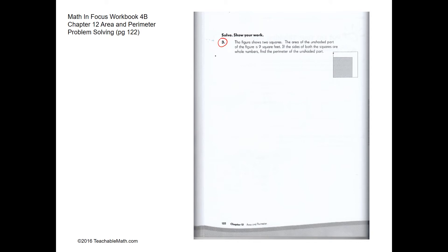Question 3: the figure shows 2 squares and the area of the unshaded region is 9 square feet. The unshaded area is the region between the two squares. Since the sizes must be whole numbers, we use trial and error. If we try 5 and 3, the unshaded area would be 25 minus 9, which is 16 — that's not correct.